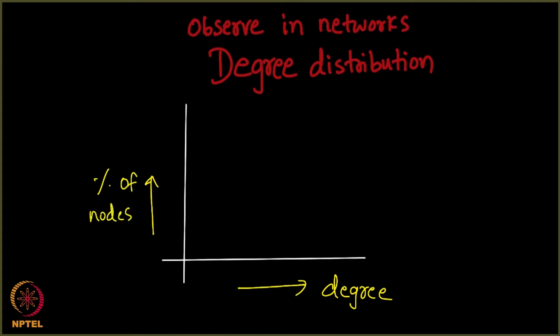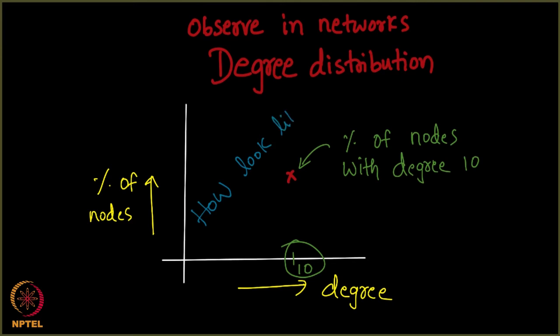Along my x-axis will be degree of nodes and along my y-axis will be percentage of nodes with that degree. This point will denote the percentage of nodes with degree 10. And our big question right now is how does this plot look like?